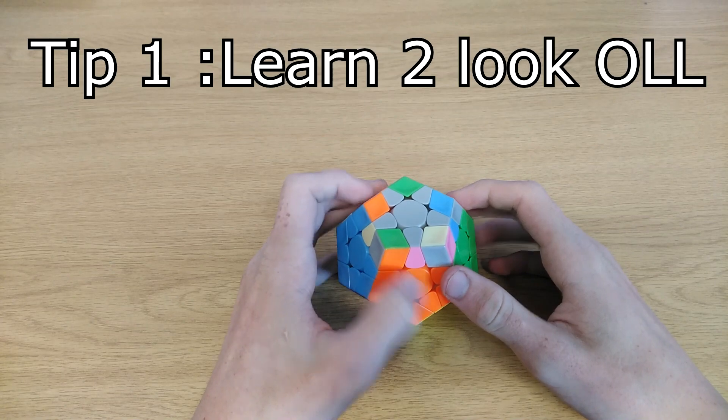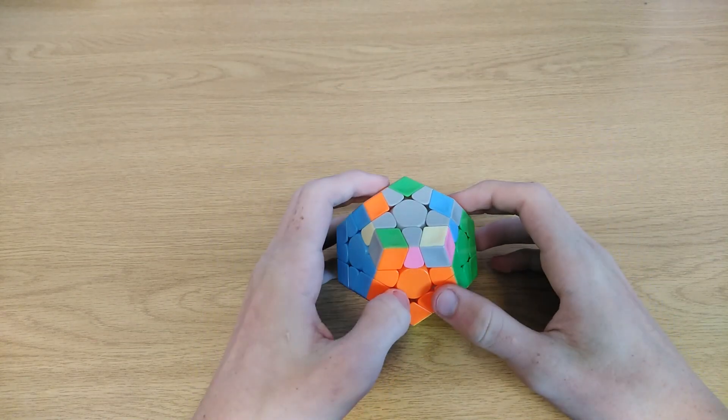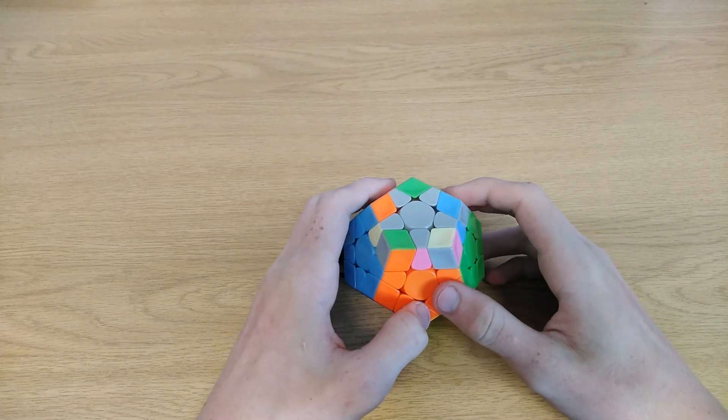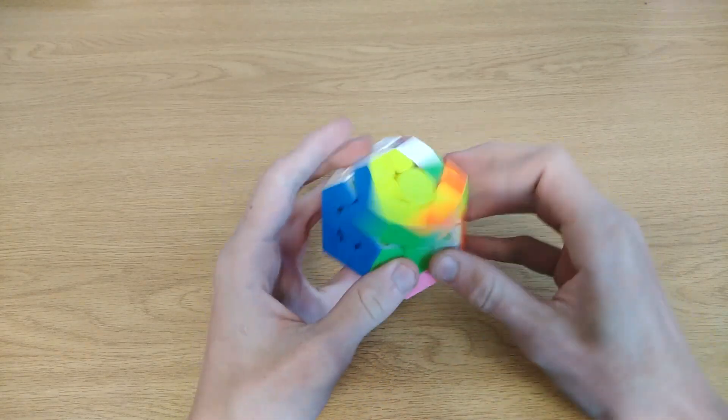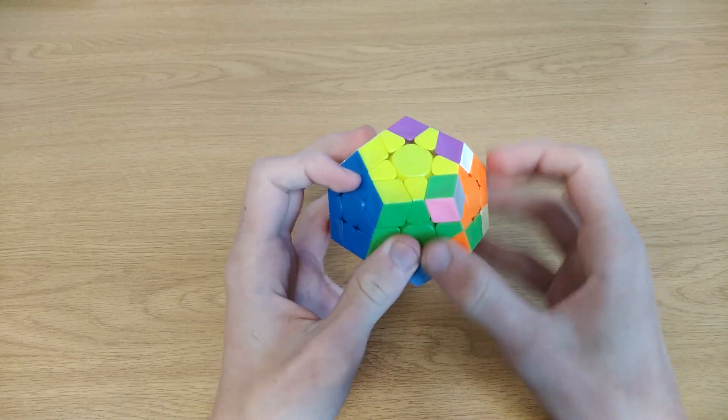Tip 1: Learn 2-look OLL. In my opinion, this is more important than 2-look PLL because commutators are quite fast. But the beginner's way of doing OLL is really slow, where you just repeat the sexy move over and over until each corner is oriented.